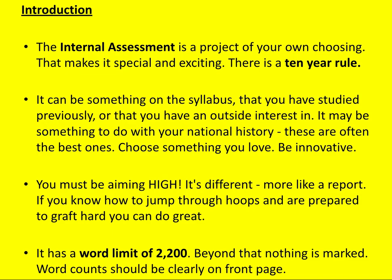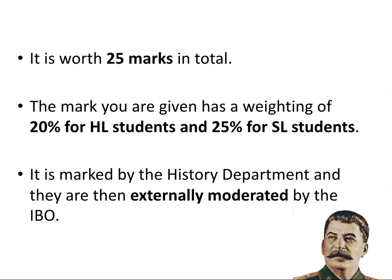The IA is different to all essays you'll have done for Papers 1, 2 and 3 — it's a bit more like a report in some respects. If you know how to jump through certain hoops and you're prepared to graft hard and get lots of drafts in to your teacher, you can do really great. The IA has a word limit of 2,200 words, and please be aware that beyond that limit nothing will be marked or credited, so you should have a word count clearly on the front page. The IA is worth 25 marks in total, with a weighting of 20% at Higher Level and 25% at Standard Level — that's between a fifth and a quarter of your overall IB grade, which is why you need to put a lot of thought and effort into it. It will be marked by your history teacher or department and then a selection will be externally moderated by the IBO.